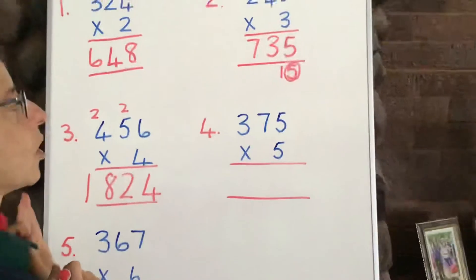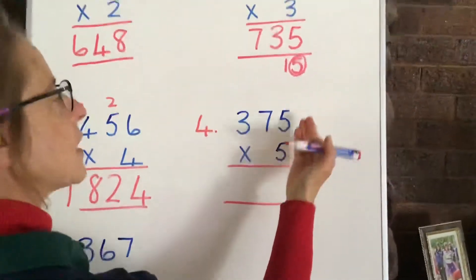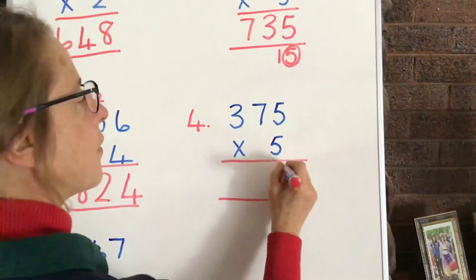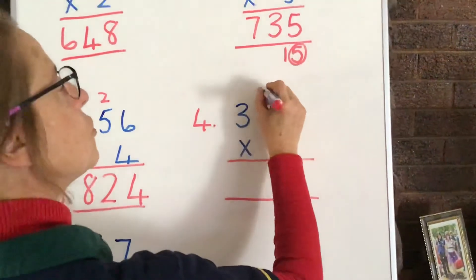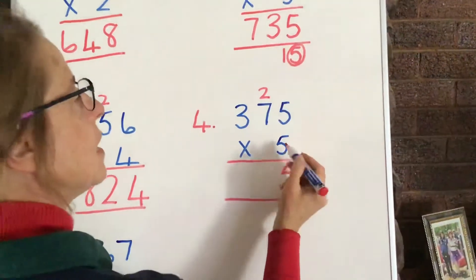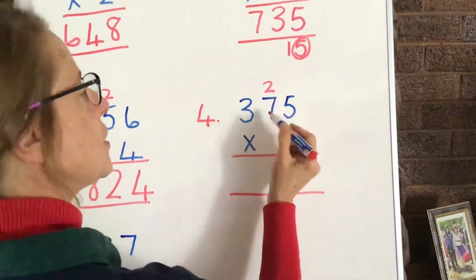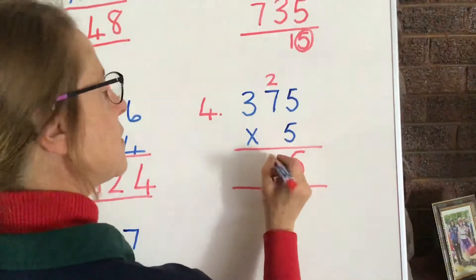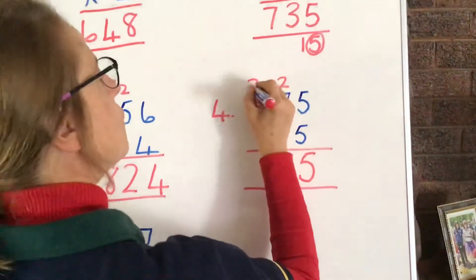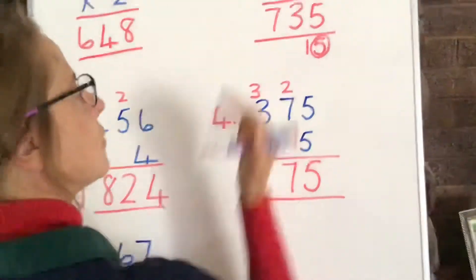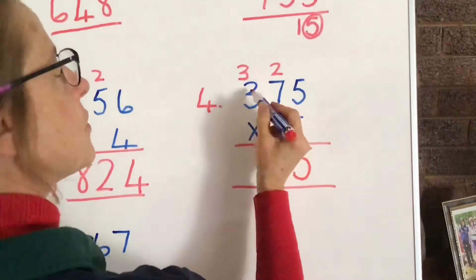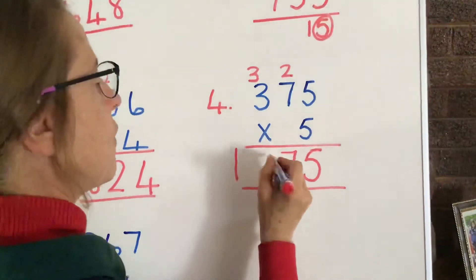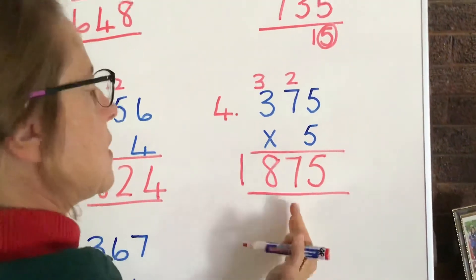Now, let's move to the next example. Here we have 5 times 5 is 25. Put down your 5 from the 25, carry your 2 above the tens. 5 times 7 is 35, add in the 2 after that, and you have 37. So, you put down your 7, you carry your 3 from the 30 above the hundreds there.